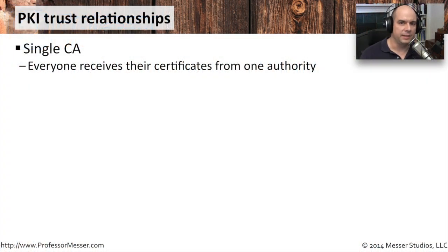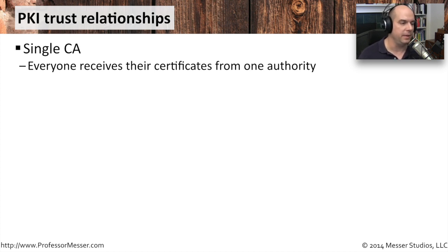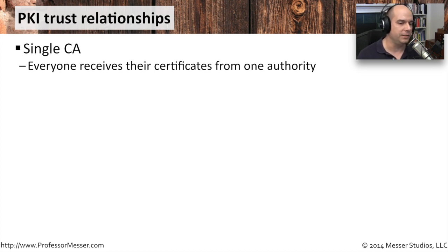One of the most important aspects of your public key infrastructure is that of trust. You have to be able to be assured that the certificates that you're using are those that you can trust, and that the names associated with them are the names associated with people who might be receiving and decrypting the information you're sending to them. Depending on the type of infrastructure you have, there may be a number of different models that you use for trust.